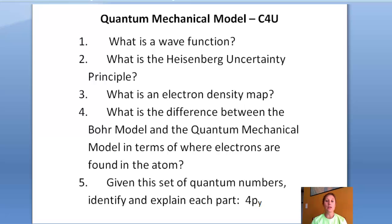Here are the check for understanding questions for the third section, the quantum mechanical model. Number 1, what is a wave function? Number 2, what is the Heisenberg uncertainty principle? Number 3, what is an electron density map? Number 4, what is the difference between the Bohr model and the quantum mechanical model in terms of where electrons are found in the atom? And the last question, given the set of quantum numbers, identify and explain each part. For 4py, explain what the 4, the p, and the y are, what they're called, and what they represent. We'll discuss these in class. Have a good day.